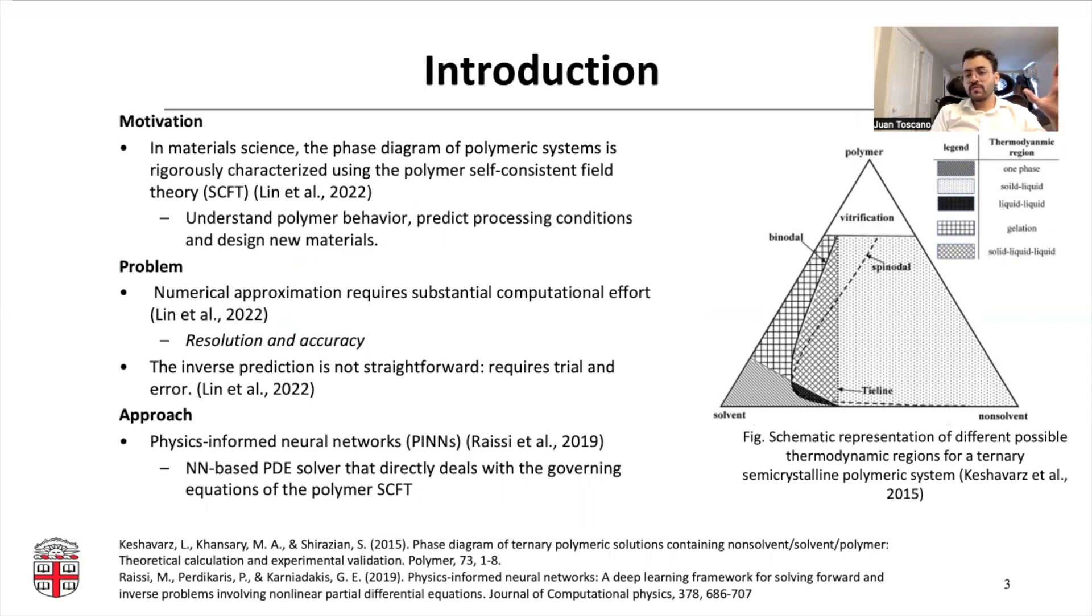In general, this problem is tackled using numerical approximations. However, if you want high accuracy and high resolution, this problem becomes computationally expensive. Moreover, inverse prediction with numerical methods is not straightforward because it requires trial and error, which increases the computational cost. To address this problem, the authors proposed using a variation of physics-informed neural networks to deal with the equation directly.